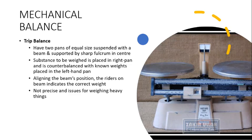After placing weights in their respective pans, the beam position is aligned. If there is any difference in weight between the two pans and the correct reading is not yet received, the riders present on the beam are adjusted. These riders give us the correct reading by adjusting them according to the weight of the object. Trip balance gives a reading that is not as precise as more advanced types of balances.